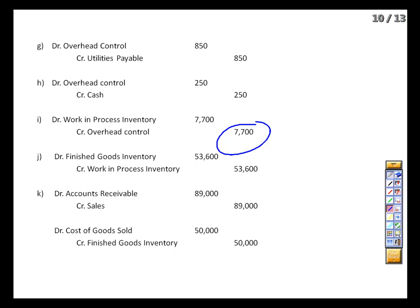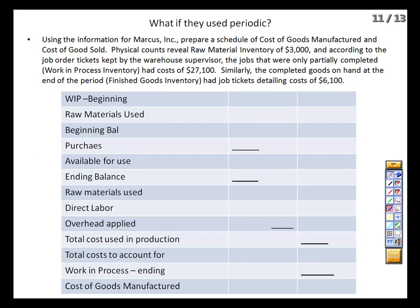That was assuming the perpetual method — keeping track of everything in all inventory accounts in real time. But what if they used the periodic method? In that case, we back into our ending amounts and cost of goods sold using the same equation: beginning inventory plus purchases minus cost of goods sold equals ending inventory, which we've been using all along. That's what we see here on the schedule of cost of goods manufactured. We'll calculate the cost of the stuff we made, and then be able to calculate cost of goods sold.